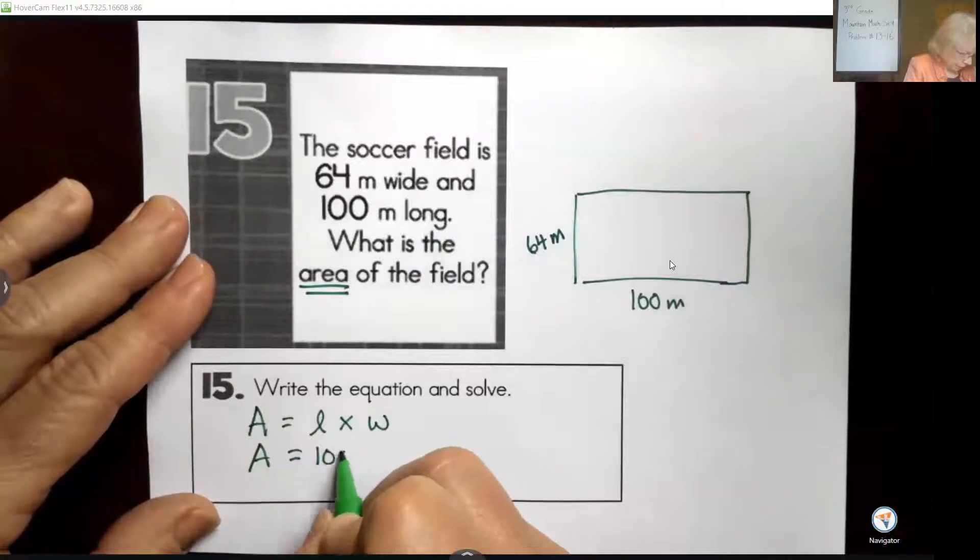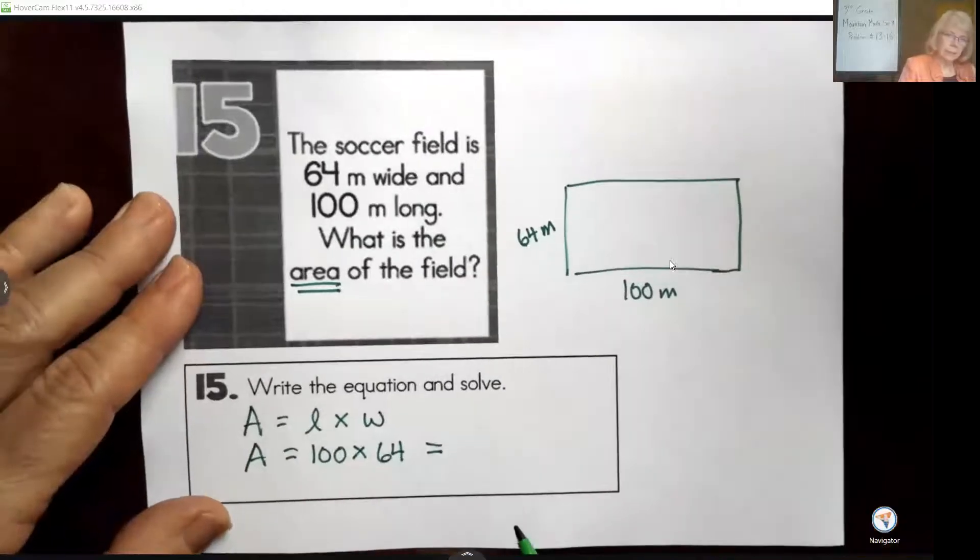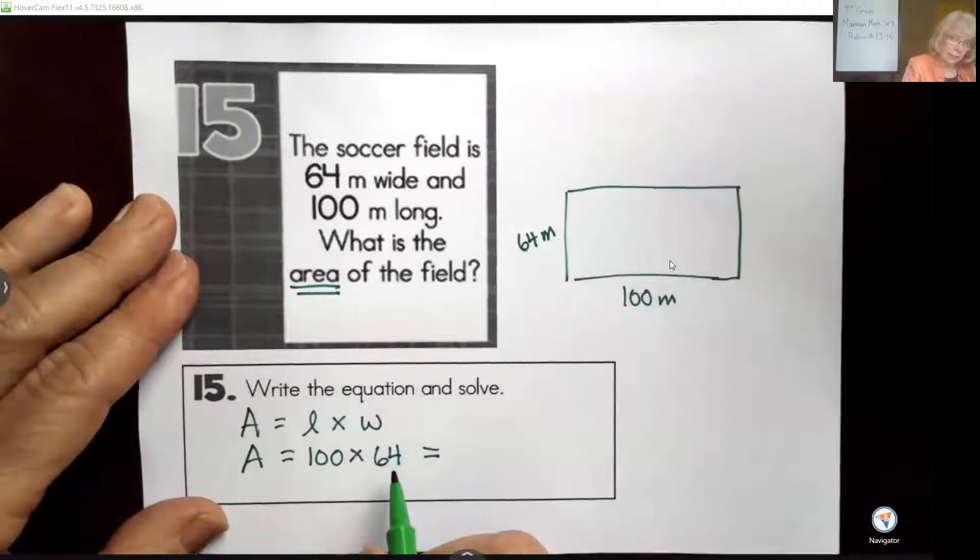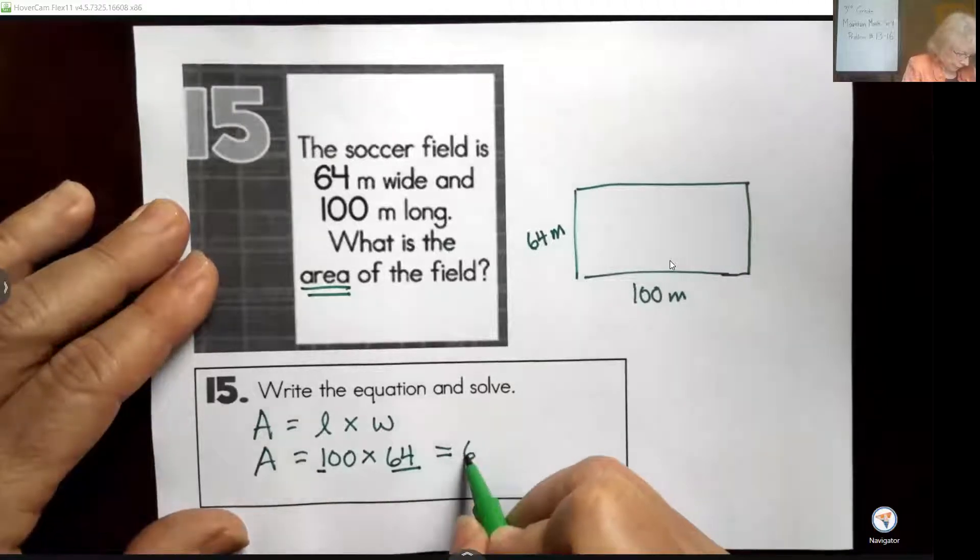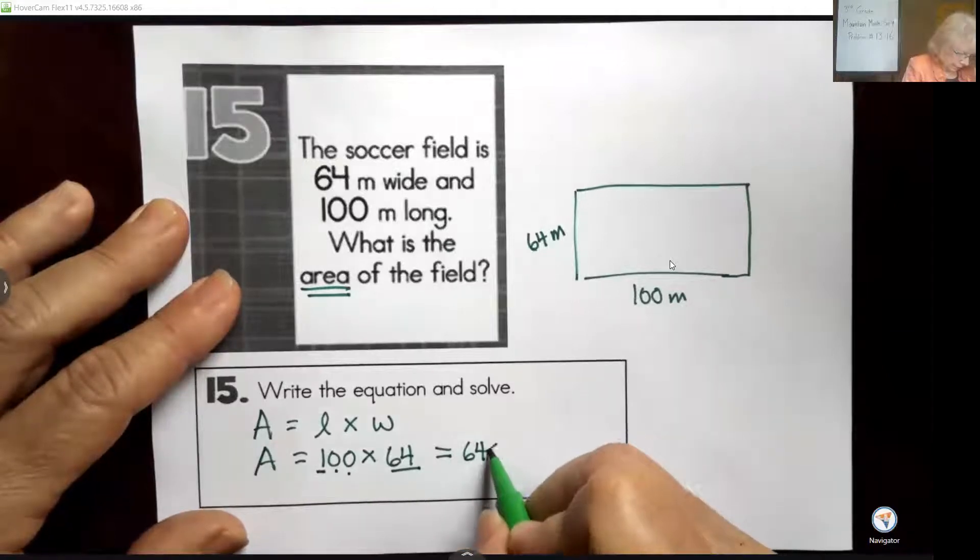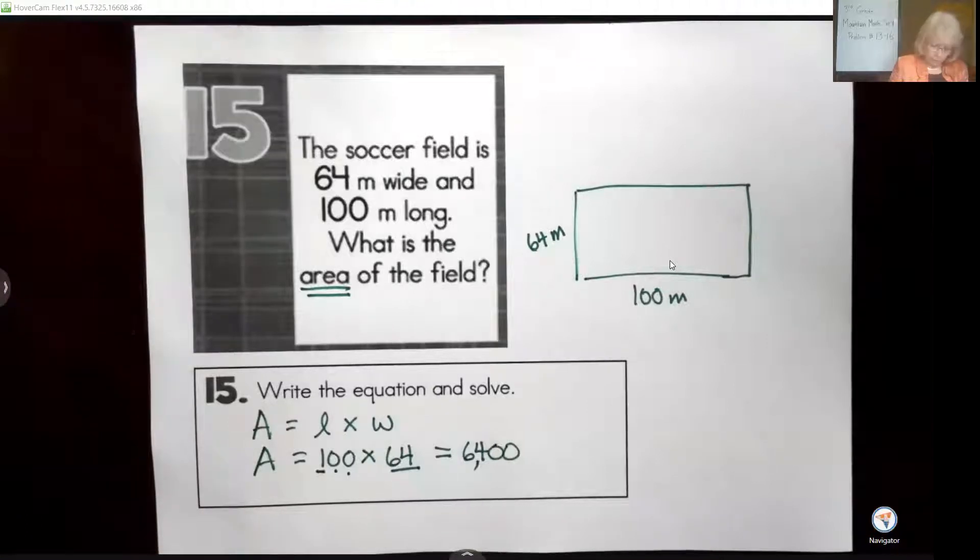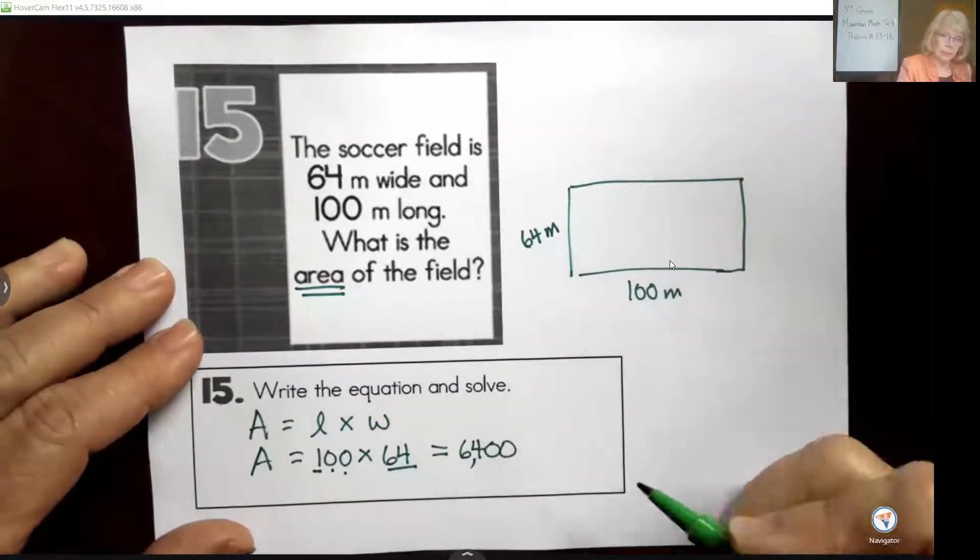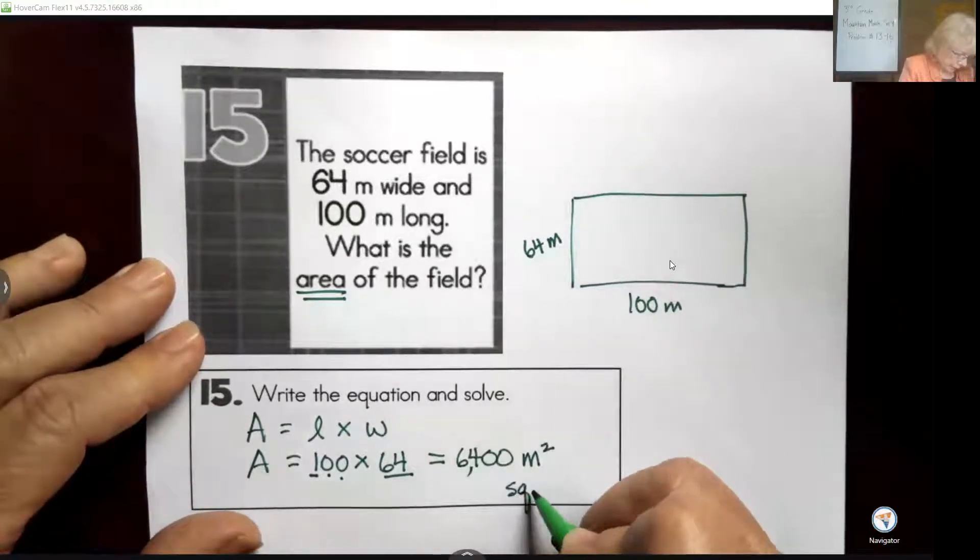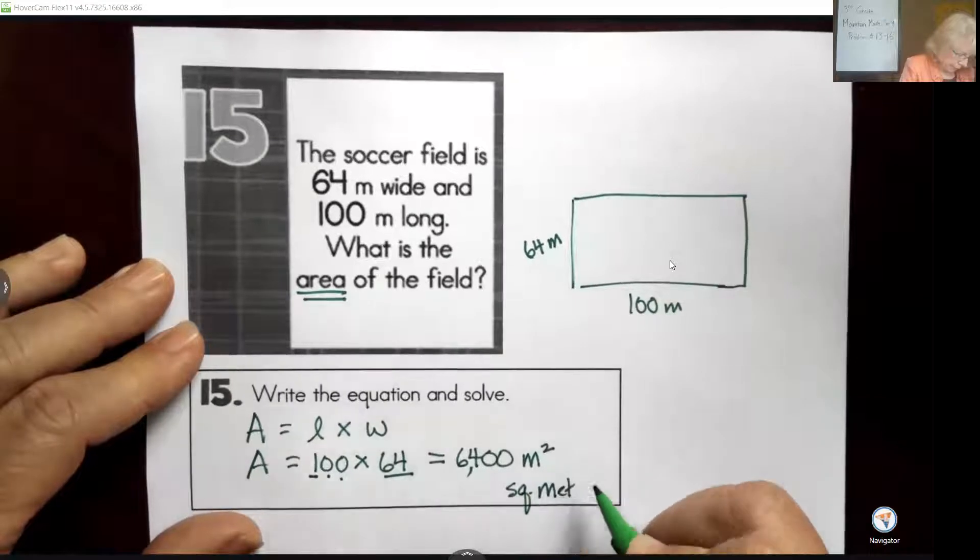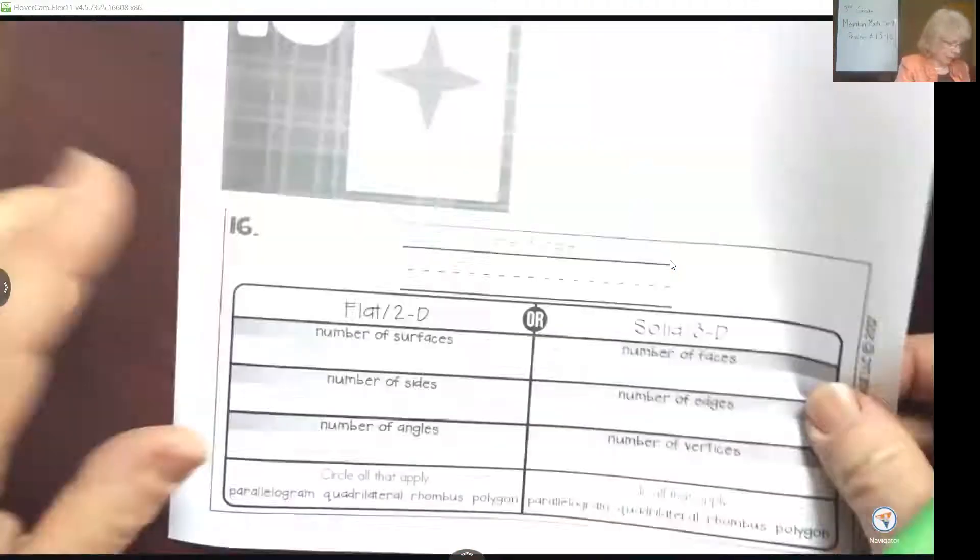So we're going to do this the way we have learned how to multiply with powers of 10. We have 1 times 64 is 64, and I'm going to add that many zeros. So I have a final area for my field of 6,400 meters squared, or you could write square meters either way.